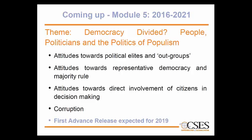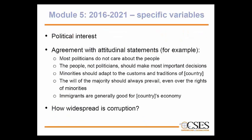Coming up is Module 5, already in the field in some countries, with the first advance data release expected in 2019. The theme is 'Democracy Divided: People, Politicians, and the Politics of Populism.' Core attitudinal questions address political elites, out-groups, representative democracy, majority rule, and direct citizen involvement in decision-making. Another theme is corruption. Specific variables include a political interest question, perceived corruption levels, statements such as 'most politicians do not care about the people' and 'the people should make the most important decisions,' and attitudes towards minorities and majority will.